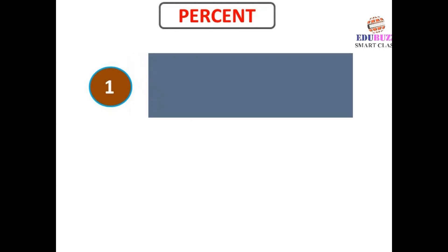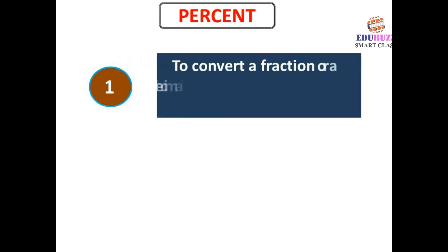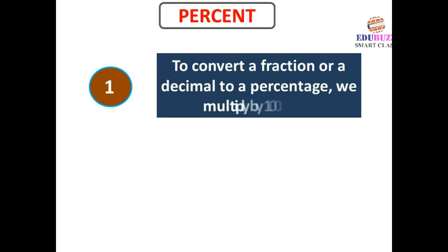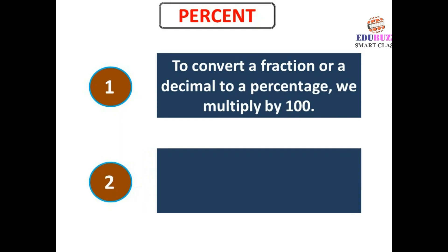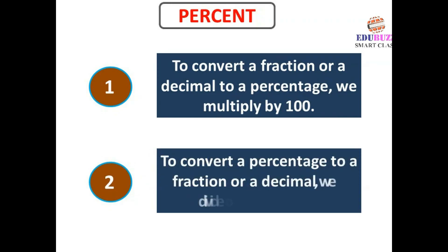To convert a fraction or a decimal to a percentage, we multiply by 100. To convert a percentage to a fraction or a decimal, we divide by 100.